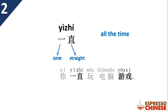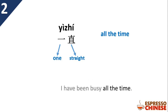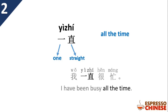Example: 你一直玩电脑游戏 — 'You play computer games all the time.' How do you say 'I've been busy all the time'? You say 我一直很忙. Pay attention to the order: in Chinese, we put 一直 before 很忙. We say 'I all the time very busy', so you just put 一直 before 很忙. 我一直很忙.